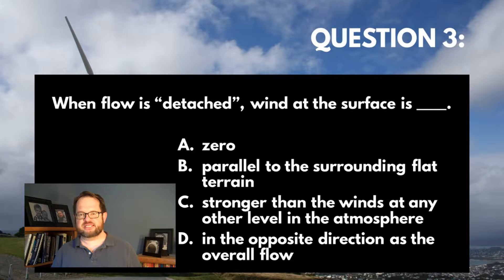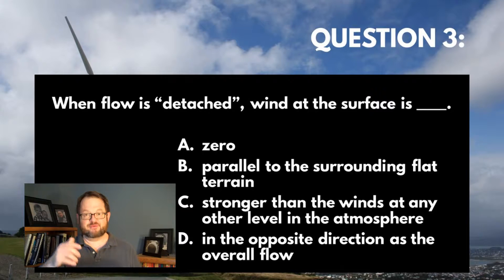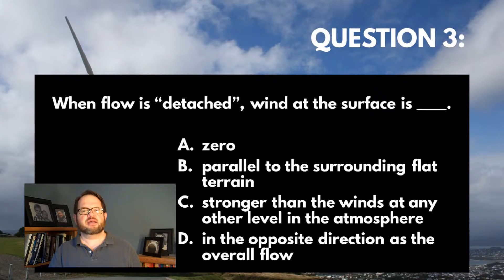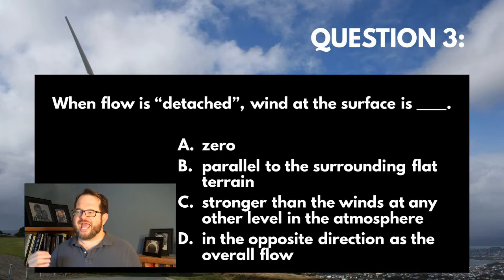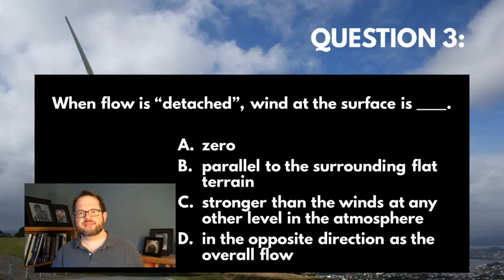Absolutely, it's got to be D. That's what detached flow means — we have broken off, we have separated this little eddy, a separation bubble, and now the flow at the surface is actually opposed to the flow overall.